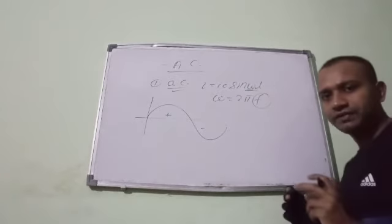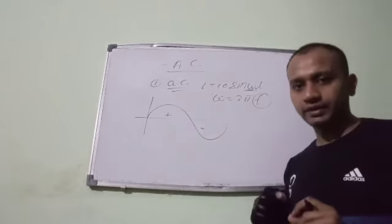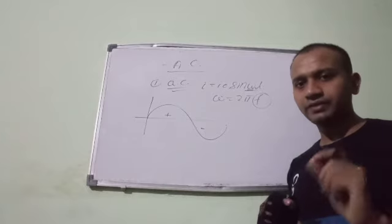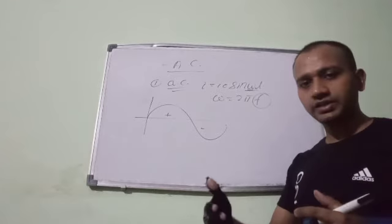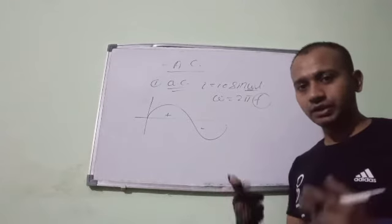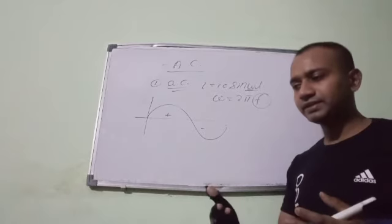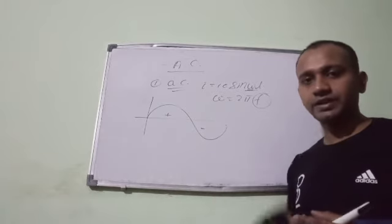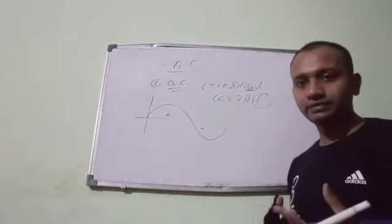Now what is F? F is the frequency of AC, that is alternating current. If it is 50 Hz, pay attention, if it is 50 Hz so direction will change 50 times in 1 second. If it is 100 Hz so direction will change 100 times in 1 second. So this is what AC is.